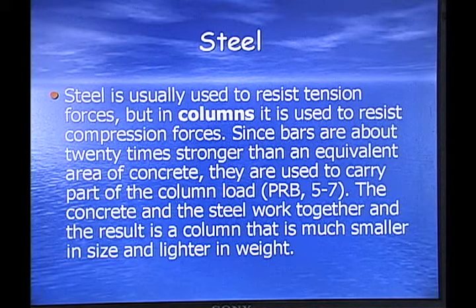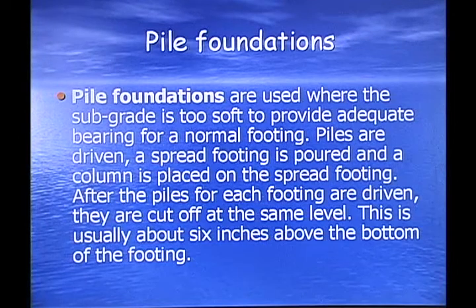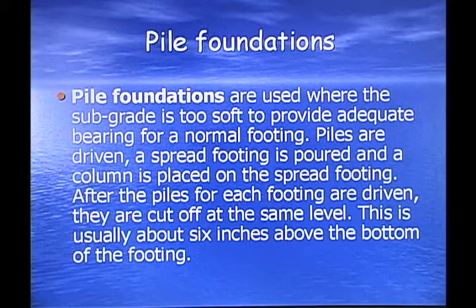Since bars are about 20 times stronger than an equivalent area of concrete, they're used to carry part of the column load. The concrete and the steel work together, and the result is a column that is much smaller in size and lighter in weight. Pile foundations are used where the sub-grade is too soft to provide adequate bearing for a normal footing. Piles are driven, a spread footing is poured, and a column is placed on the spread footing. After the piles for each footing are driven they are cut off at the same level, usually about 6 inches above the bottom of the footing.